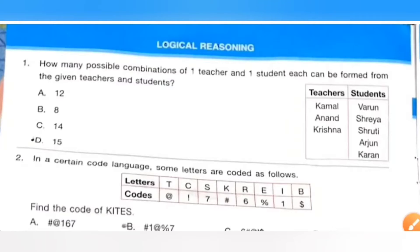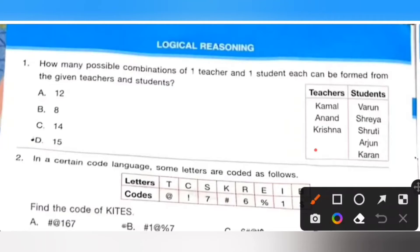First section, logical reasoning. First one: How many possible combinations of one teacher and one student each can be formed from the given teachers and students? There are total 3 teachers and 5 students, so 3 into 5 equals 15 combinations can be formed. So option D is the correct answer.